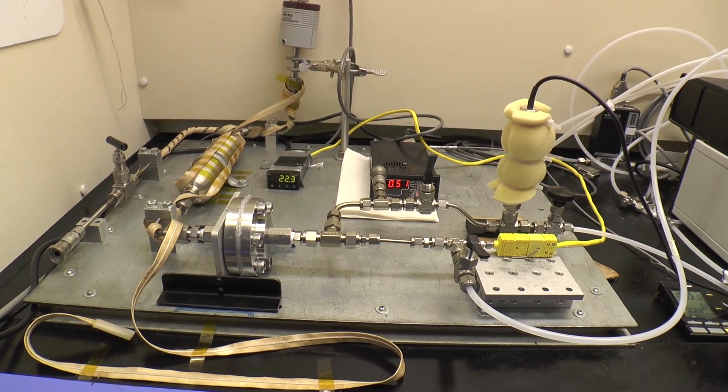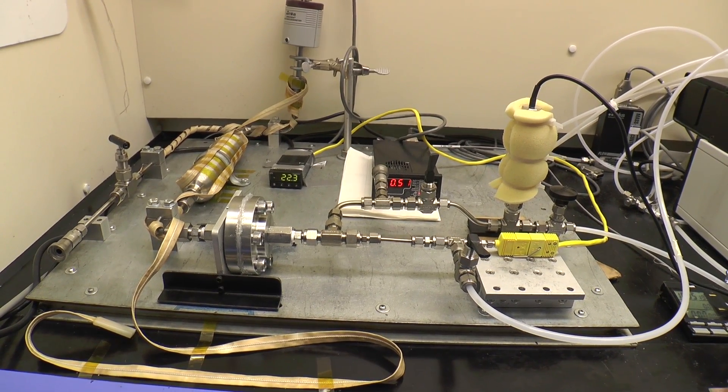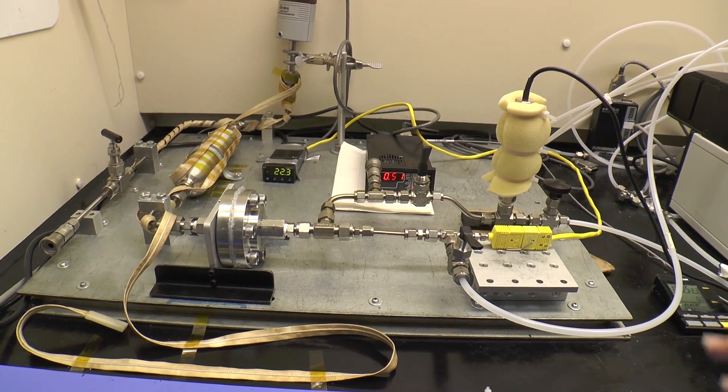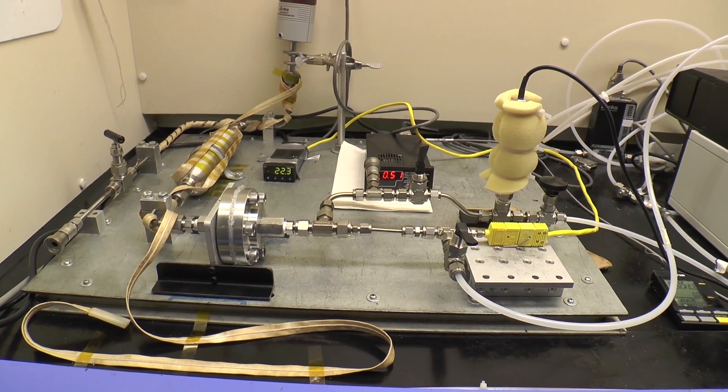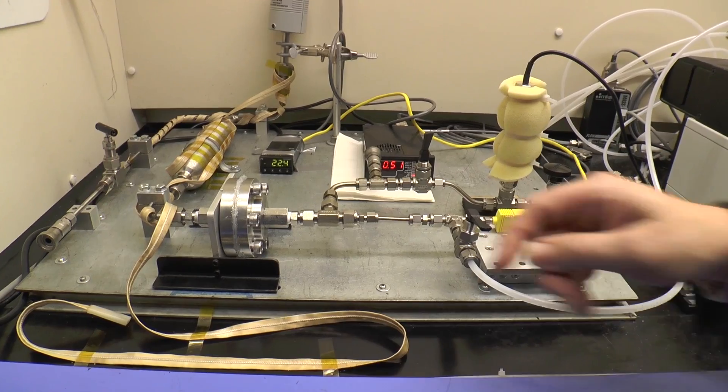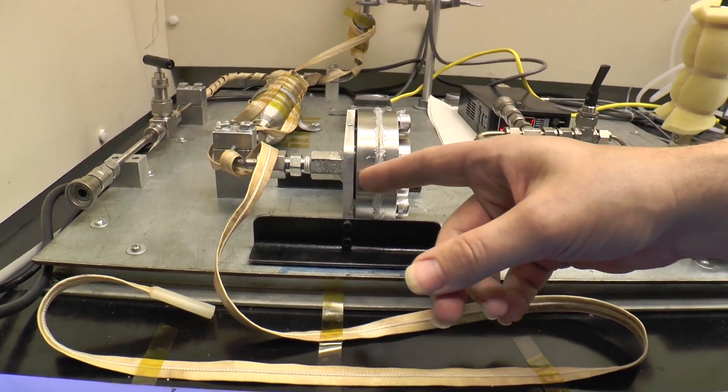This setup is a fundamental permeation cell that a graduate student from Alva Lugo's group put together. This allows us to measure the permeability of a single gas through a polymer film. That polymer disk is currently sandwiched between these two metal plates.